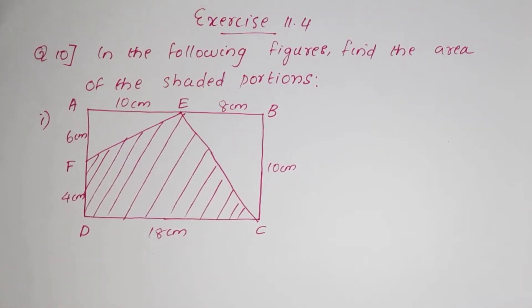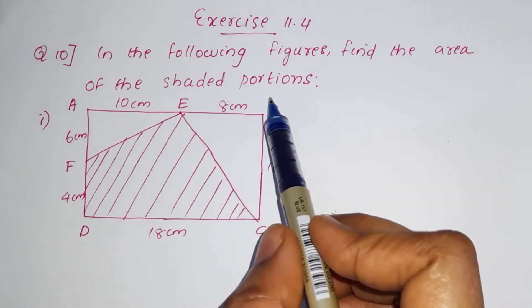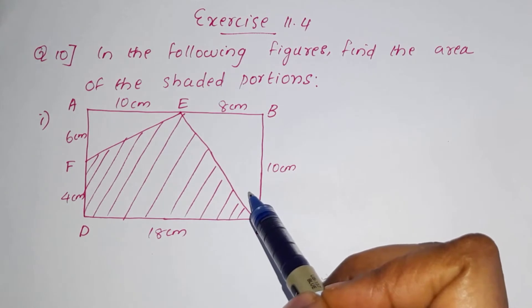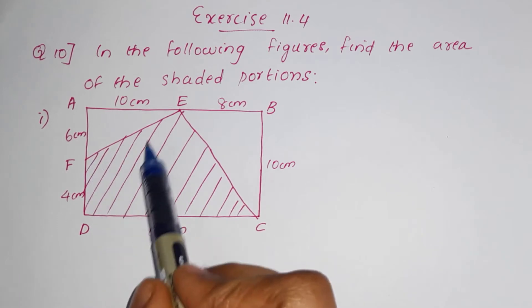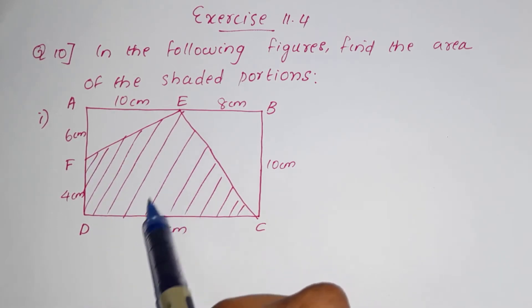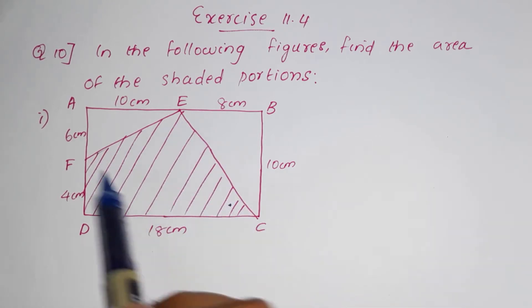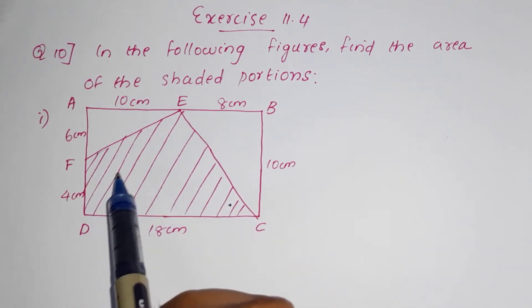We are going to do exercise 11.4, Question No. 10. Let's look at the following figures and find the area of the shaded portion. We have two figures. We are going to work on a rectangle. There is a shaded portion, and we need to find out this shaded area.